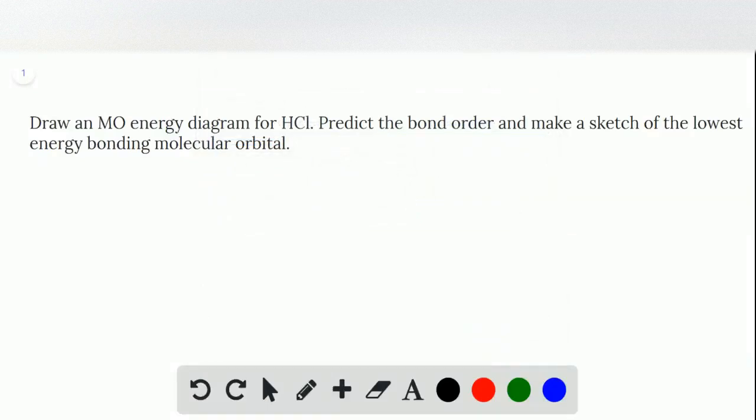The difficult thing about this question is that it asks us to draw the molecular orbital diagram for HCl, but it doesn't give us a lot of hints on how we need to do that.